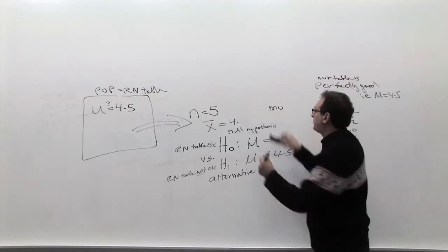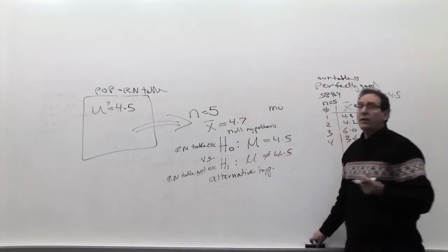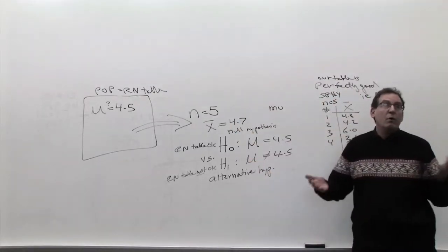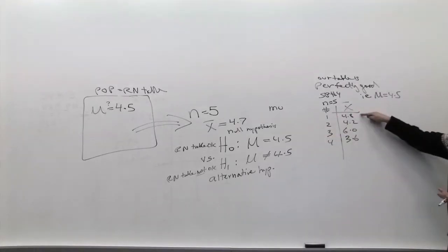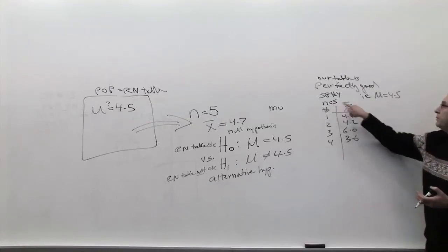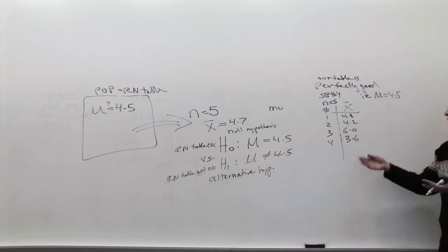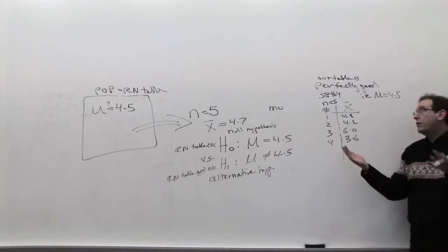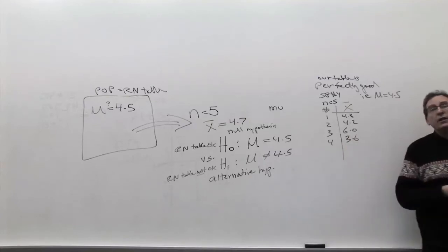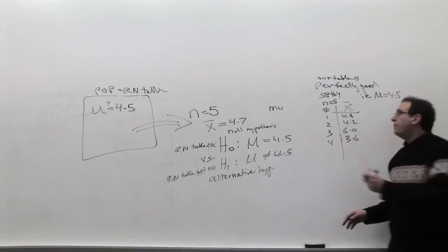What about 4.7? Again, 4.7 is pretty close to 4.5 from one point of view. A little more professional way of looking at it: well, 4.7, most of these averages, which are typical examples of five numbers coming from a good table, are even worse than 4.7. They're 4.8 or 6.0 or 3.6. So, 4.7, relatively speaking, is about as good as you're going to get. So, again, the answer should be, I accept H0. What about 4.8?